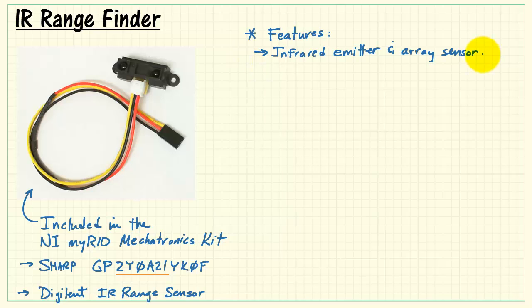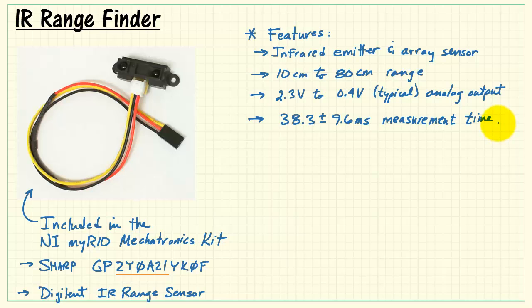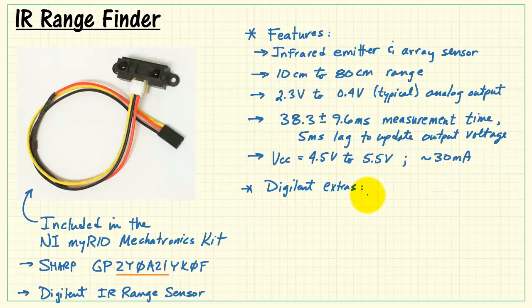Let's review the features of this device. It includes an infrared emitter and array sensor. Here's the emitter, and over here is the sensor. It has a range of 10 centimeters to 80 centimeters, and an output voltage range of 2.3 down to 0.4. 2.3 volts corresponds to 10 centimeters, 0.4 corresponds to 80 centimeters. The measurement time is 38.3 plus or minus 9.6 milliseconds, and an additional 5 milliseconds lag to update the output voltage. Power supply is 4.5 to 5.5 volts, and it draws about 30 milliamps.